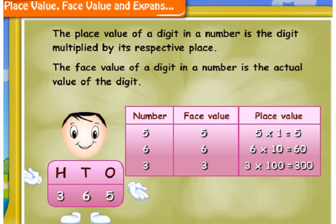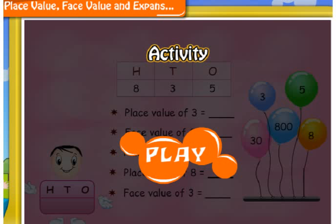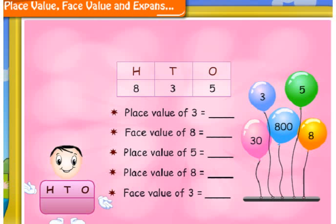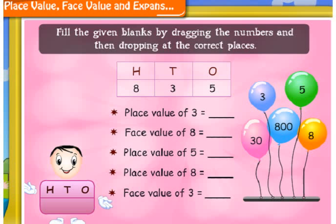In the same manner, you can find the face value and place value of each digit for different numbers. The number 835 is represented on me. Fill in the given blanks by dragging the numbers and then dropping them at the correct places.